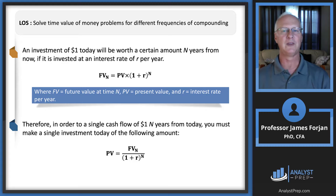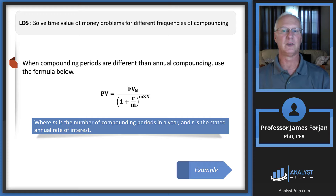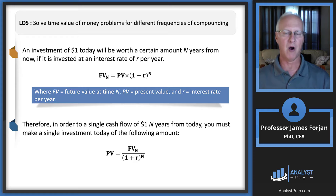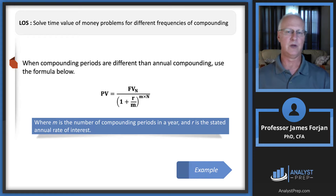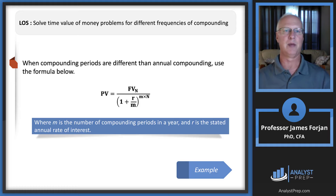When compounding over multiple periods during the year, we adjust both N and R in the formula. We divide R by M (the number of compounding periods per year) and multiply N by M. So R/M goes in the parentheses and M × N is the exponent. This identifies different compounding periods.